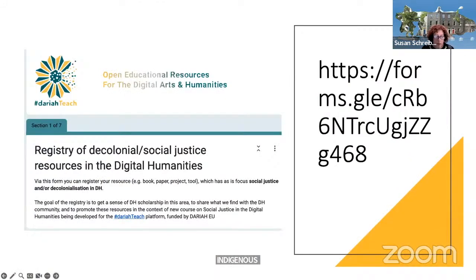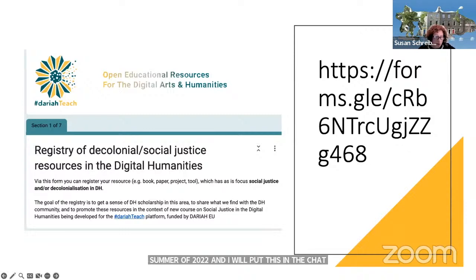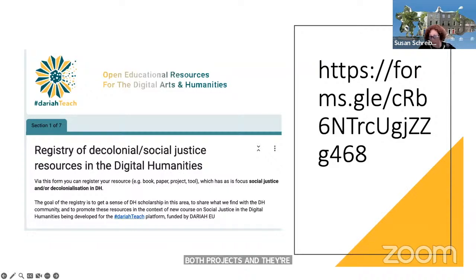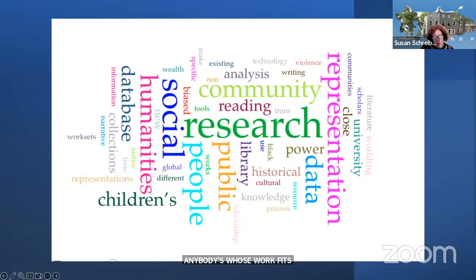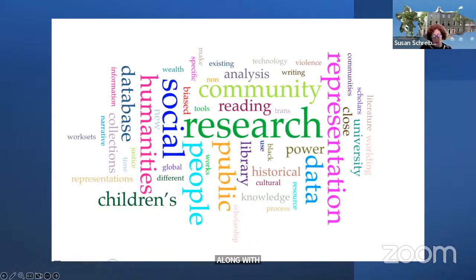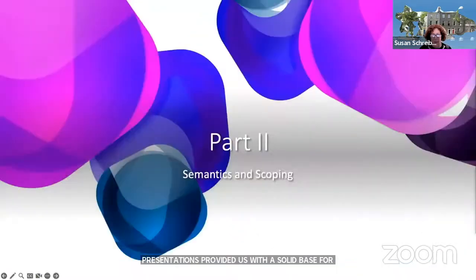We began with a survey in the summer of 2022, and we invited colleagues to tell us about their research — both projects and theoretically informed articles. We received 22 responses. The survey is still open, and we encourage anybody whose work fits into this area to submit their research, as we're still very actively recruiting case studies. The result of our survey, along with desk research including looking at past Global DH conference presentations, provided us with a solid base for social justice projects in many parts of the globe, although many gaps remain, and we'll come back to some of them later.